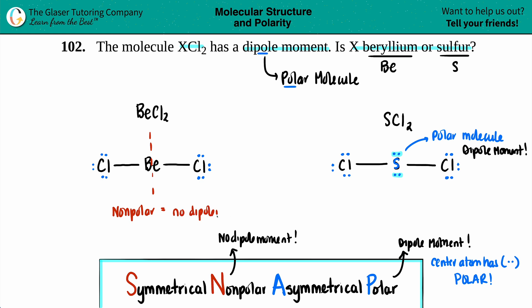And for our question, they wanted to have the dipole moment, and the dipole moment came from SCl2. So what was the X element? Yep, it was sulfur, and that is the final answer.